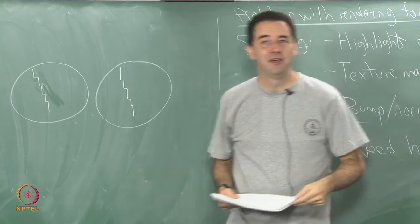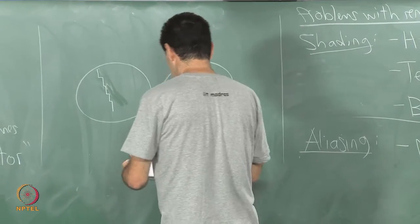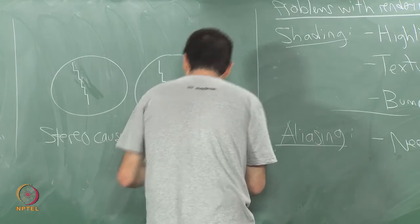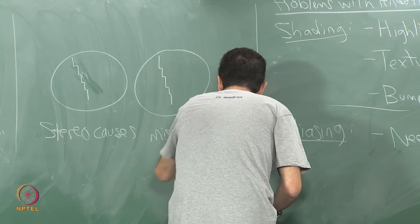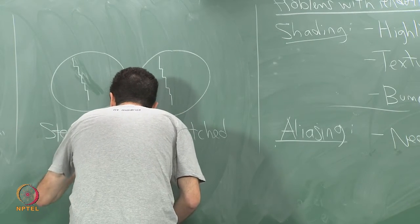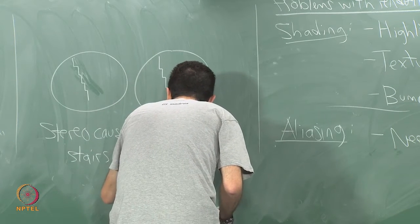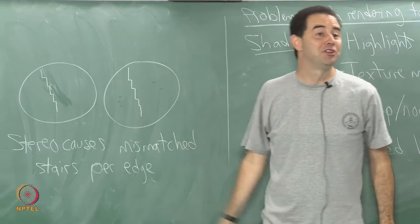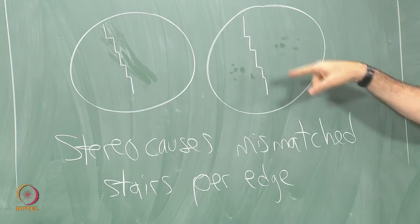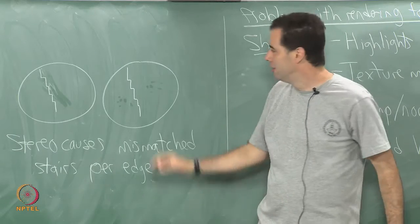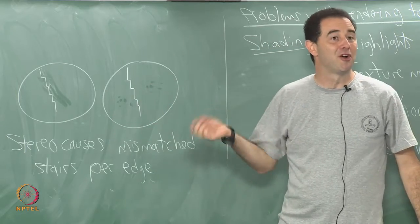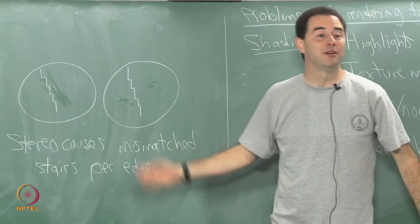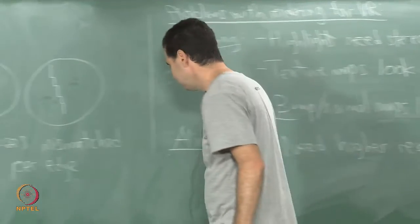See if you can find that in some of the demos you are trying. Stereo causes mismatched stairs or mismatched escalators for every edge. Generally speaking, the higher the contrast between the two sides of the edge, the more you see this effect. So if you have black on one side and white on the other you will notice this strongly. Aliasing is really bad because of all this — I am sorry I do not have the solution.